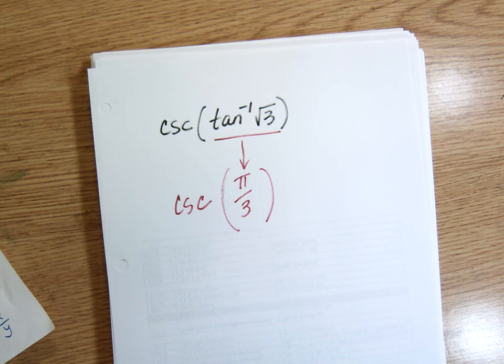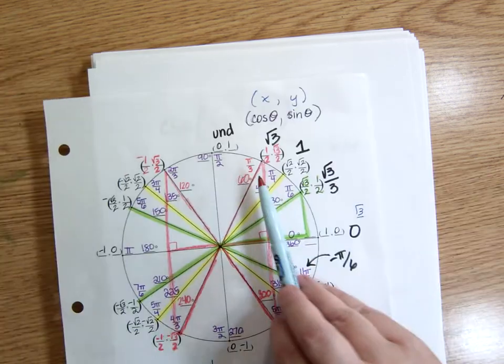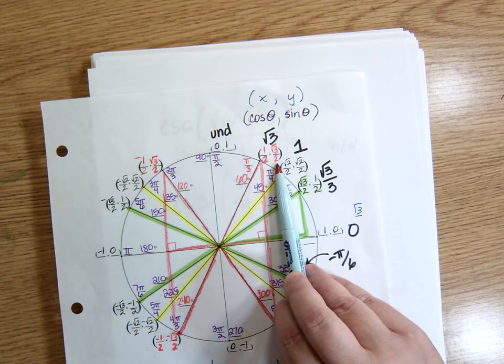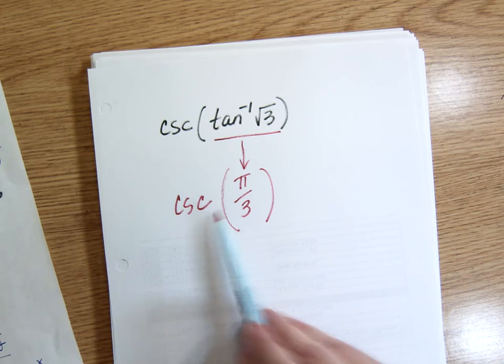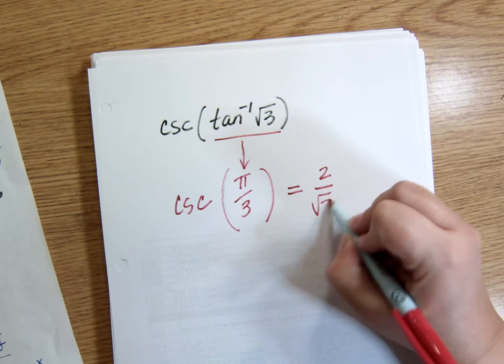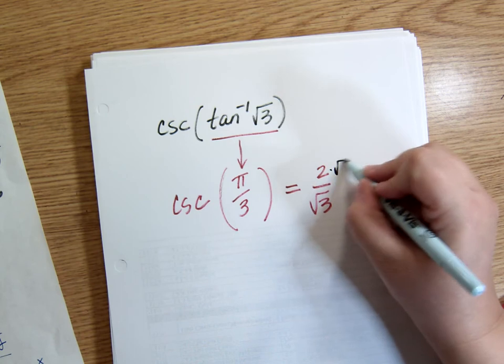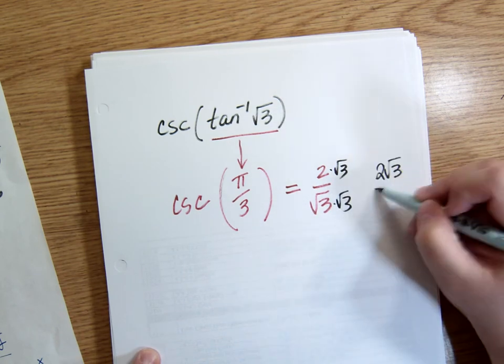Cosecant of pi over 3. Cosecant is related to what? Sine. So I'm looking for the sine of pi over 3, which is square root of 3 over 2. And I'm not actually finding the sine. I'm finding the reciprocal of the sine. So instead of square root of 3 over 2, it's 2 over square root of 3. But we can't leave it like that. So I'm going to rationalize. And I get 2 root 3 over 3.